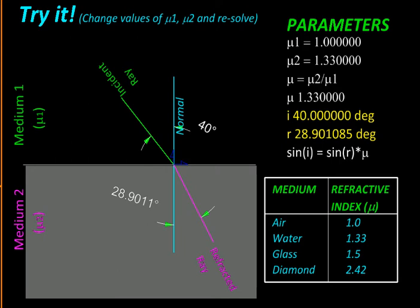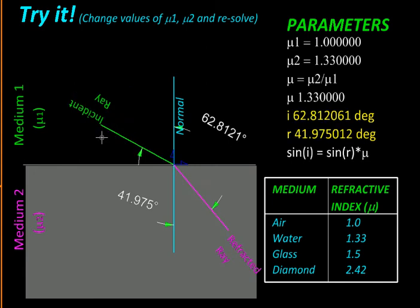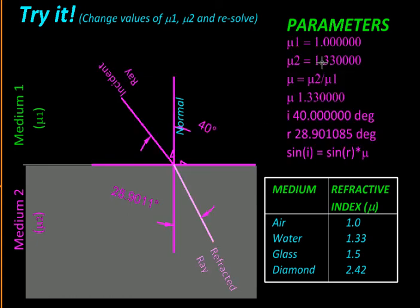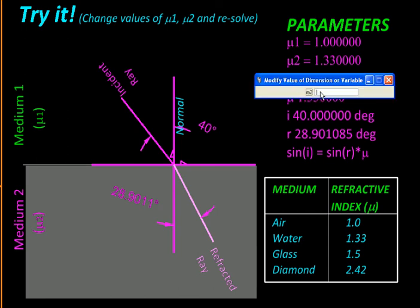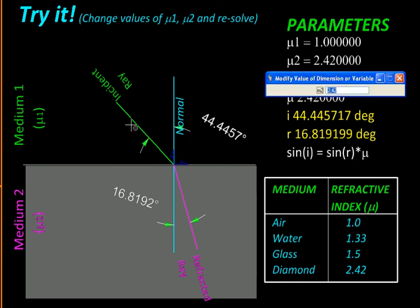Let us see how this refraction occurs. We'll move this incident ray and you will see the refracted ray also changes. It also depends upon the media — so if we change the refractive index from 1.33 like water to 2.42 that of diamond, then you will see it bends even more.